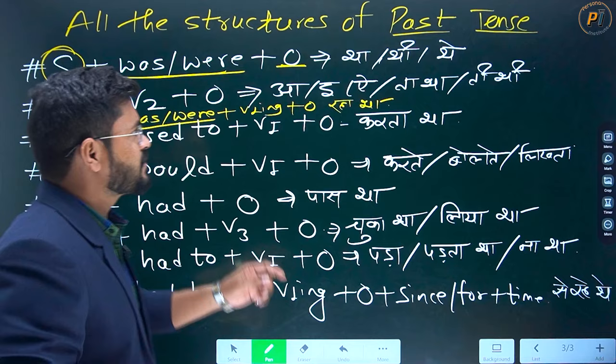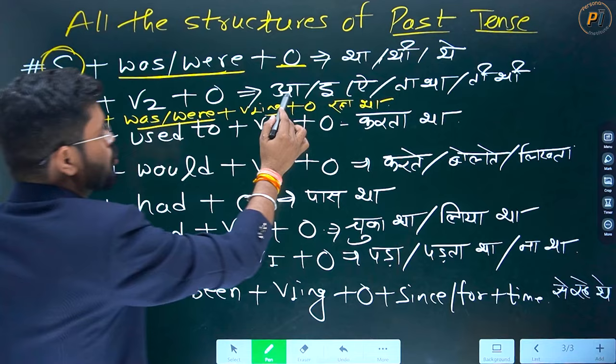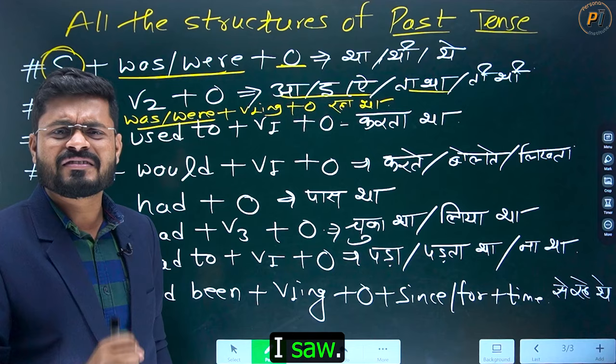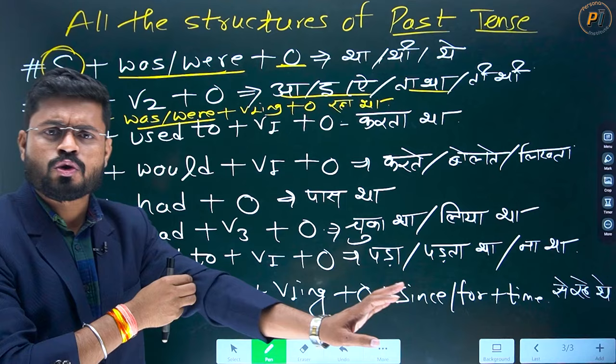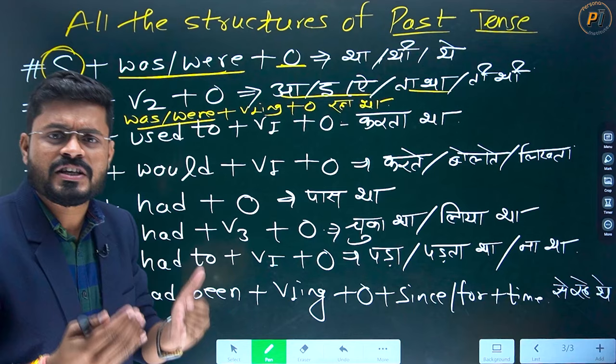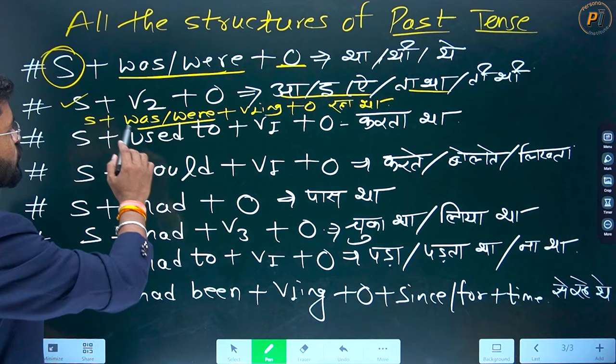Samajhna — jab bhi kuch tha aap, toh 'was/were' lagega. Aur jo simple past tense hai — jo bhi aapne kiya — main wahaan gaya: I went there. Maine dekha, maine samjha: I understood. Maine bola: I spoke. Maine padaya: I taught. Maine uski madad ki: I helped him. Next — maine uski madad kar raha tha: I was helping him. Main aaram kar raha tha jab aap aaye — I was taking rest when you came.